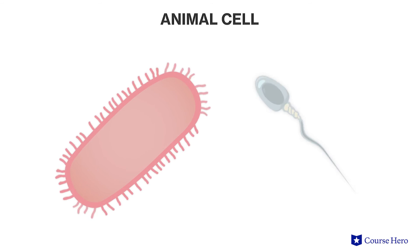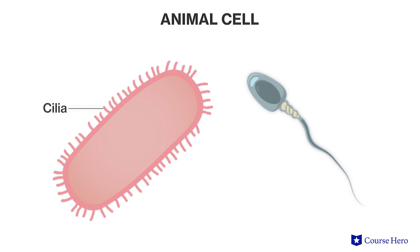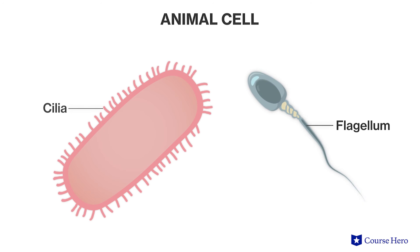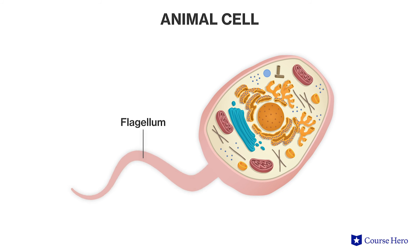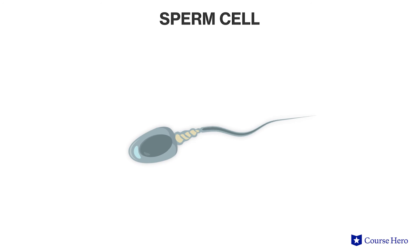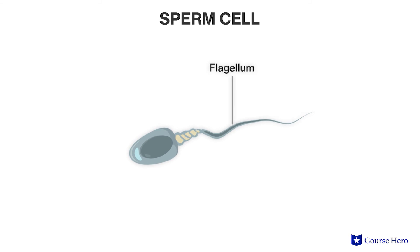Some animal cells contain cilia or flagella, structures that are anchored in the cell membrane and which are composed of microtubule proteins, an important component of the cytoskeleton. Flagella are thin, whip-like tails that assist cells in their movement. A sperm cell, for example, has a flagellum to enable it to move in its fluid environment.